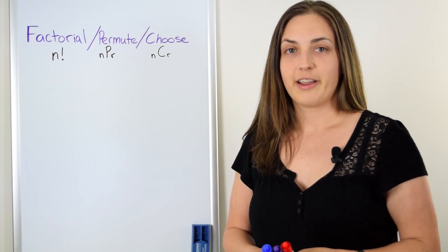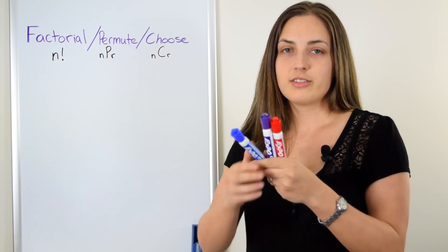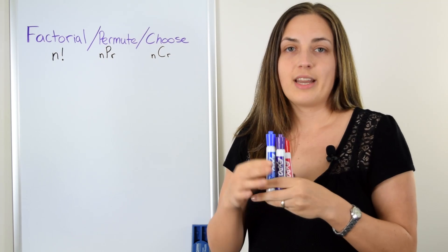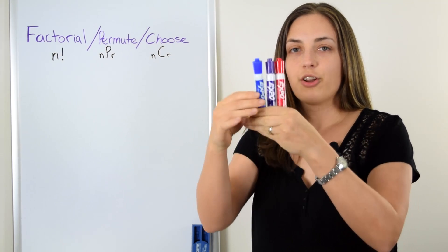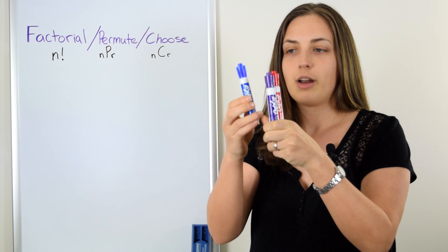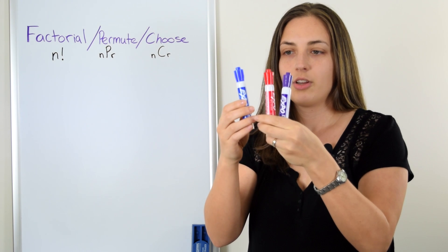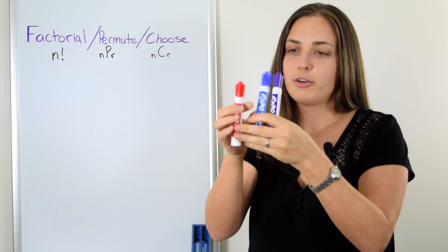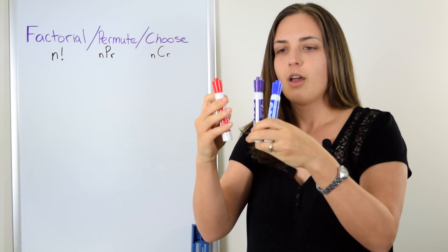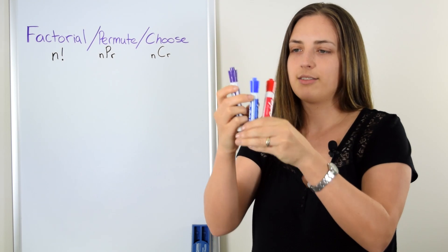Let's start with N factorial. For a really easy example, let's say that I have three things, like these three different coloured markers, and I want to arrange them in a row. I could arrange them with the blue one first, and then purple and red, or I could keep the blue one first and swap these two. Or I could put the red one first, and I have two options there. And finally I could put the purple one first, and I have two options there as well.